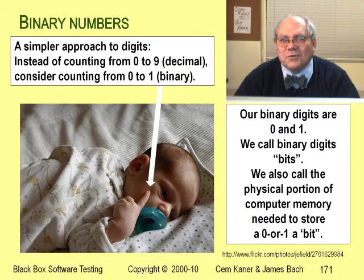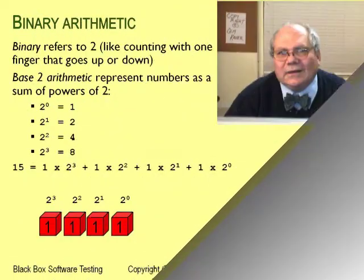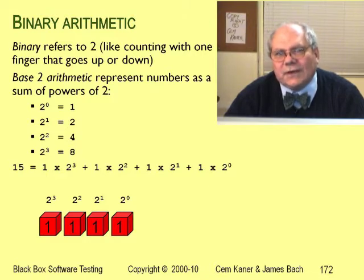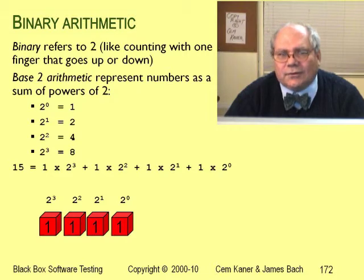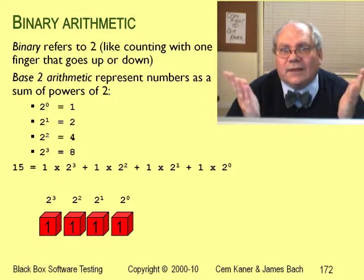Modern computers don't usually store numbers as decimal digits — they store numbers in bits instead. Bits are binary digits. Instead of decimal arithmetic, computers do binary arithmetic. So for the next few slides, I'll keep showing you number boxes, but these boxes are binary instead of decimal. They can have a 0 or they can have a 1. That's it.